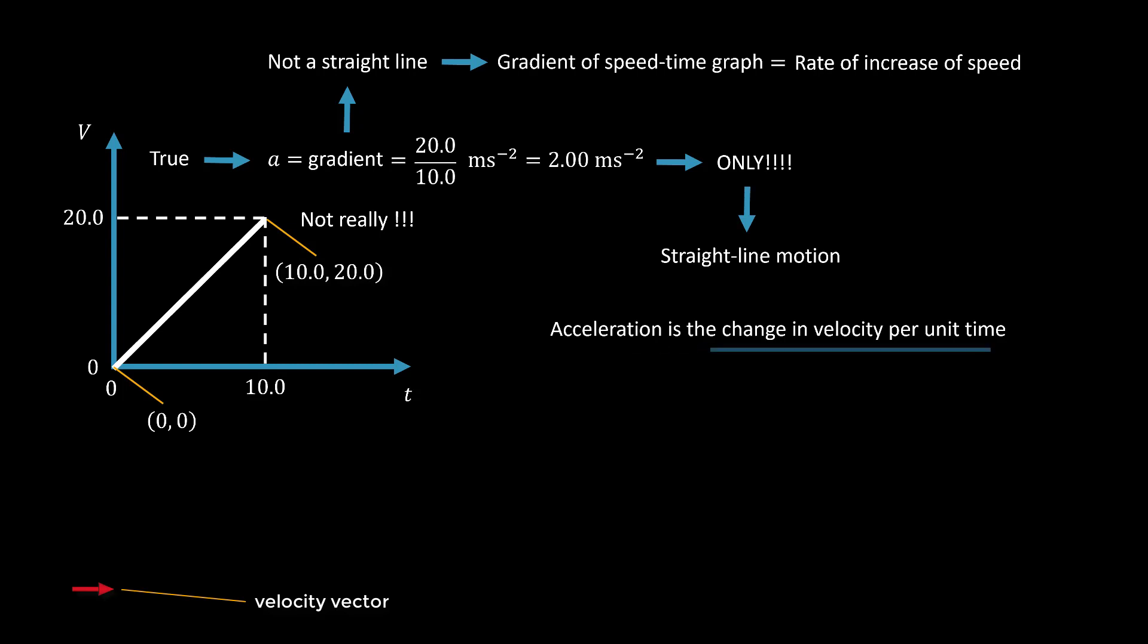The change in velocity per unit time is a vector quantity. And what do we mean by a change in a vector? We are talking about the change in the velocity vector. Whenever we say change in velocity per unit time, what we mean is how much the velocity vector has changed in a unit time interval.